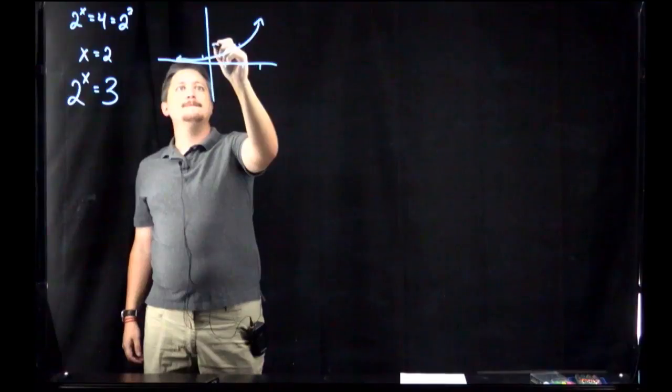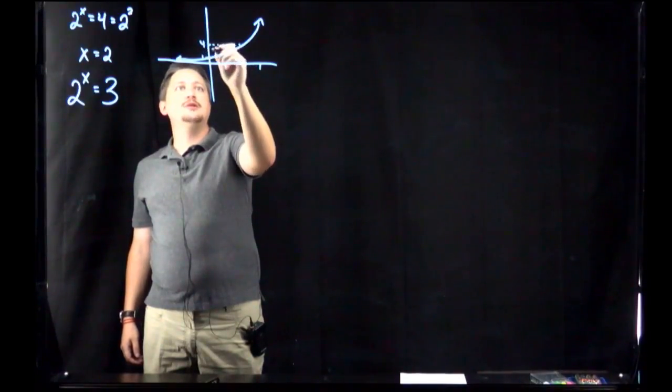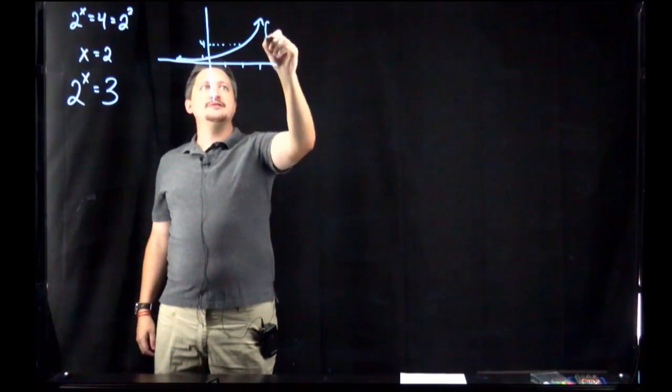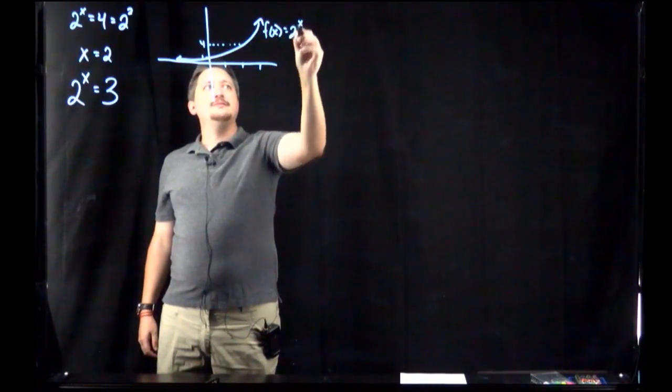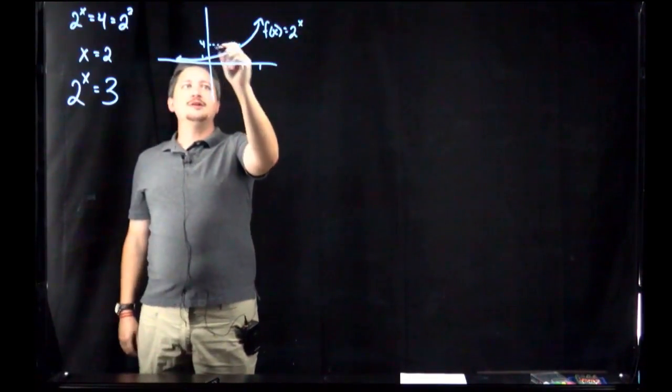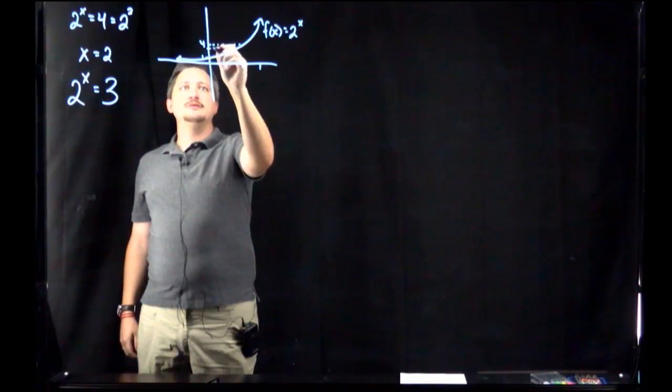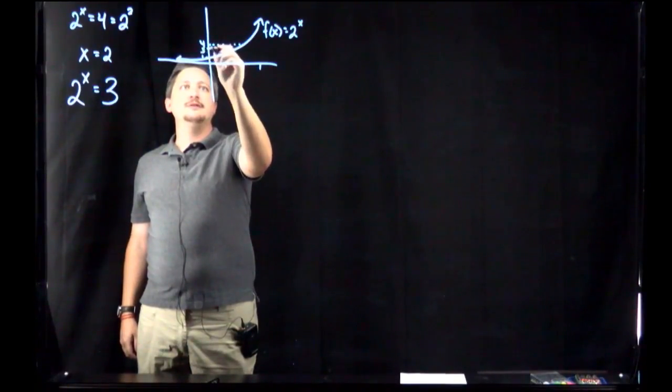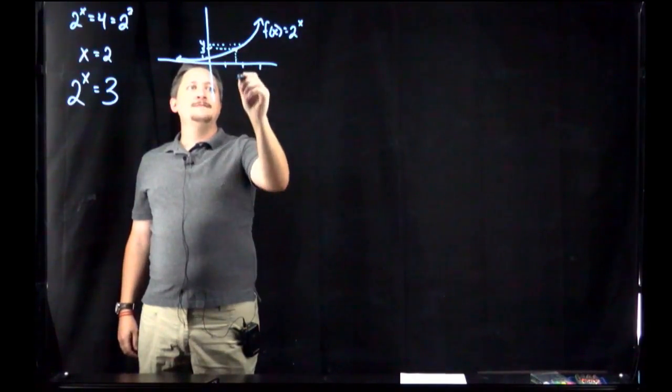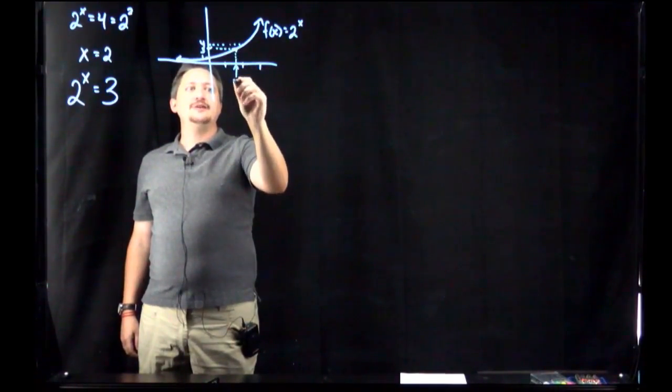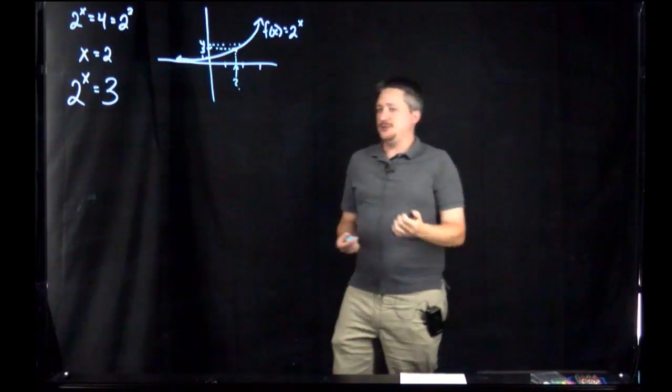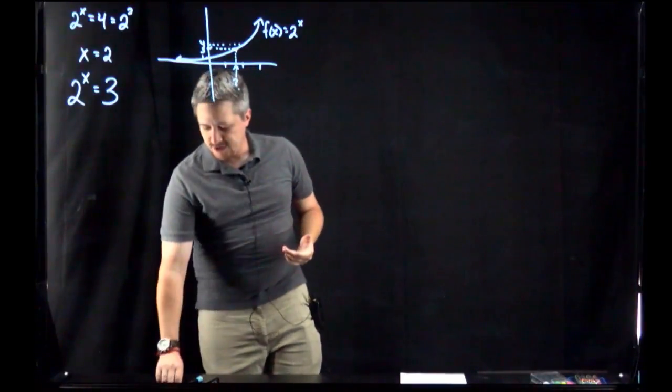Because 2 squared is 4. This is f(x) = 2^x. So if we look at where the function equals 3, it is definitely on the curve somewhere at some x value. The question is, how do we know what x value it is? This is where logarithms come in.